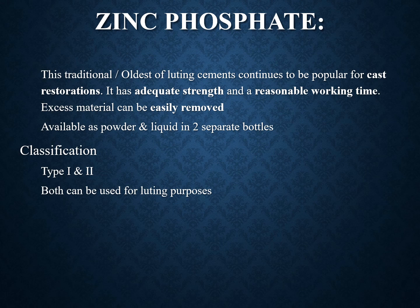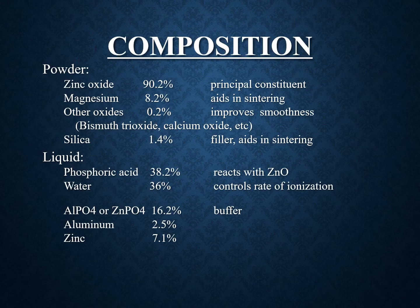Zinc phosphate is a traditional, one of the oldest luting cements available and also one of the most popular for cast restorations. It has adequate strength and reasonable working time, and excess cement can be easily removed. It comes as powder and liquid in two separate bottles. It is classified into Type 1 and Type 2, and both types can be used for luting purposes.